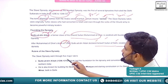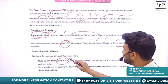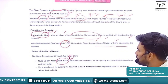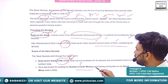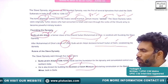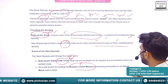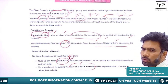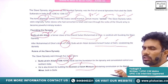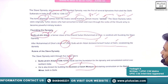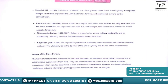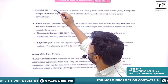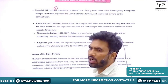Qutubuddin Aibak ruled for four years. His major contributions are: he is known for building Quwwat-ul-Islam Mosque and he also laid the foundation for Qutub Minar. Both are in Delhi. This is his greatest contribution in architecture.